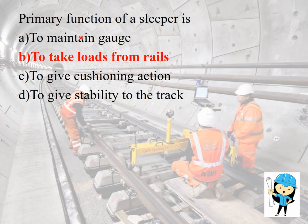The primary function of the sleeper is to take the load from the rails to the ballast. Other functions are to hold the rails at the correct gauge and to support the rails.